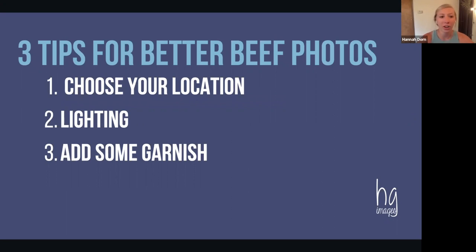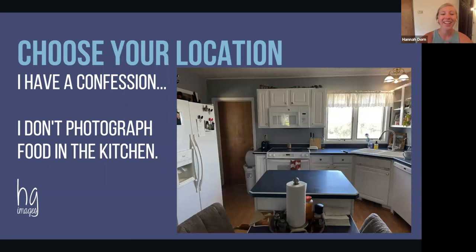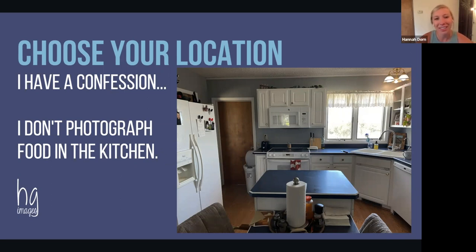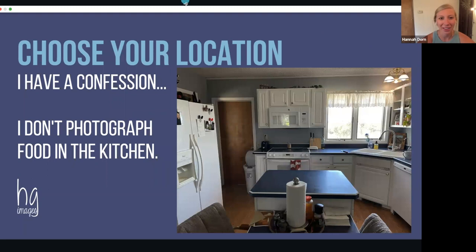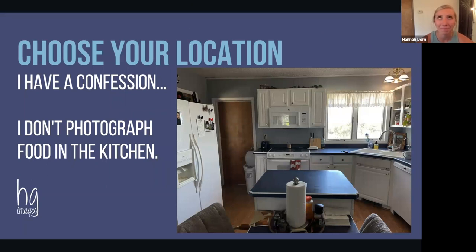I titled this section 'Three Tips for Better Beef Photos' — just because it's a fun alliteration — but this can really go for any product. The three main things are: choose your location, choose your lighting, and add some garnish. So, choose your location. I have a confession — this is my kitchen, and it is not pretty. It's very functional, but it is not the most beautiful kitchen. It's not going to be making its way into any lifestyle blog posts anytime soon, and it has horrible lighting.